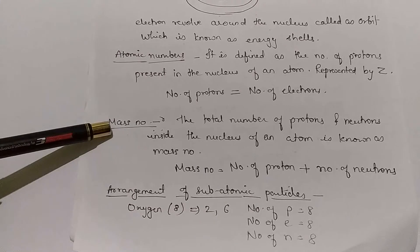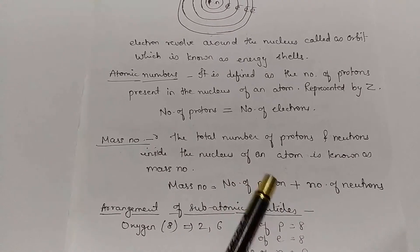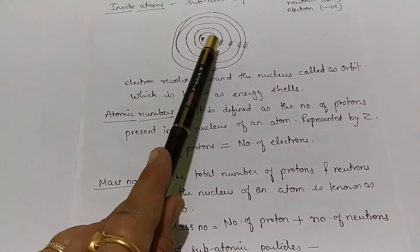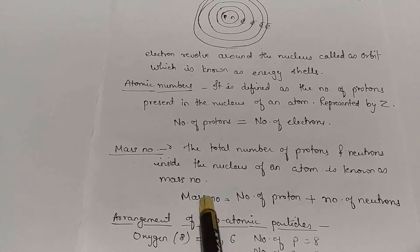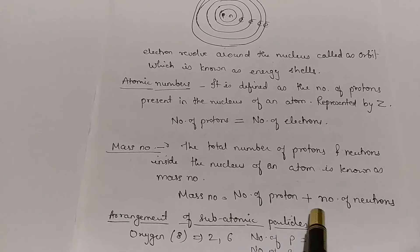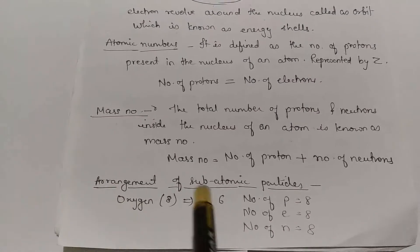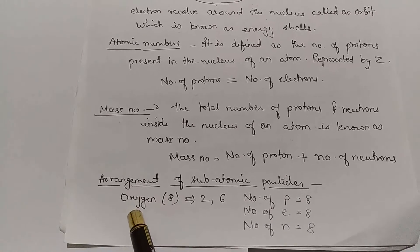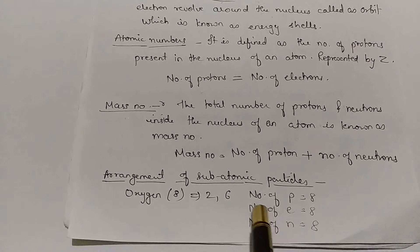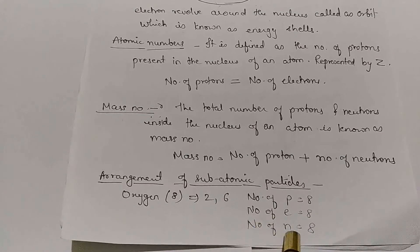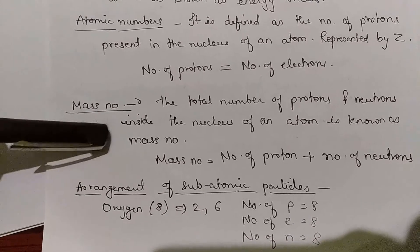After atomic number, the next point is mass number. Mass number is the total number of protons and neutrons present inside the nucleus of an atom. In short, mass number = number of protons + number of neutrons. For oxygen, whose atomic number is 8 and electronic configuration is 2 and 6, the number of protons is 8, number of electrons is 8, and number of neutrons is also 8.